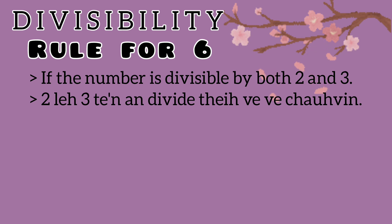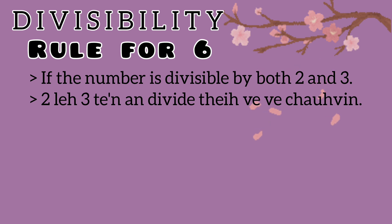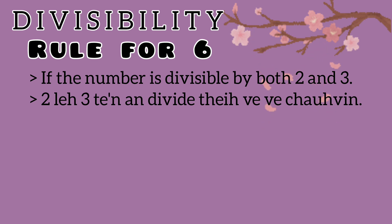For a number to be divisible by 6, it must satisfy both conditions: divisible by 2 — meaning it is an even number with last digit 2, 4, 6, 8, or 0 — and divisible by 3 — meaning the sum of its digits is divisible by 3.